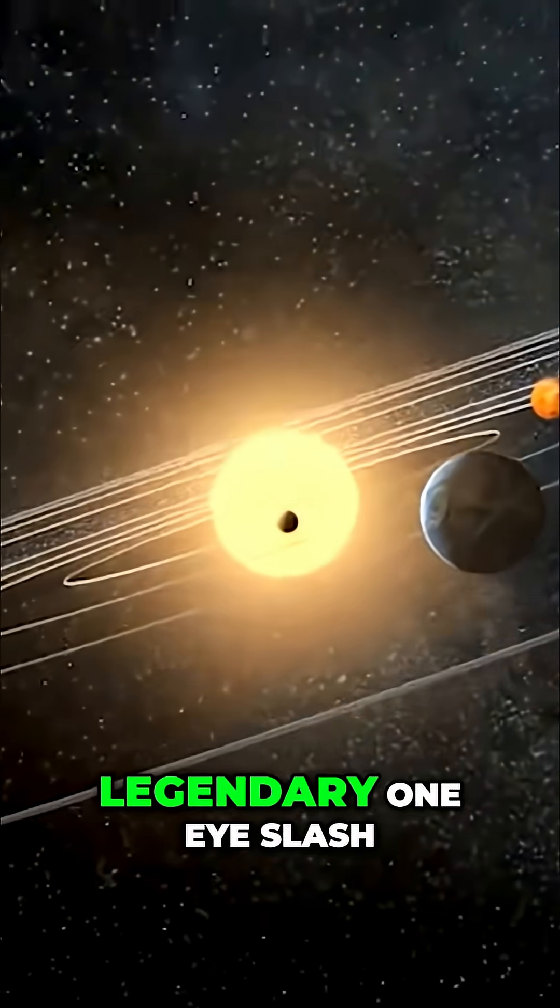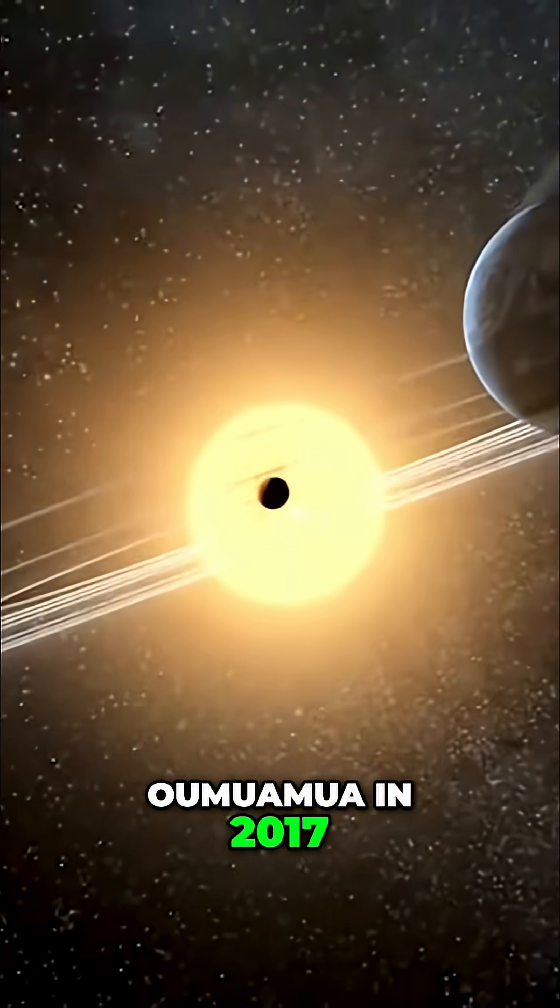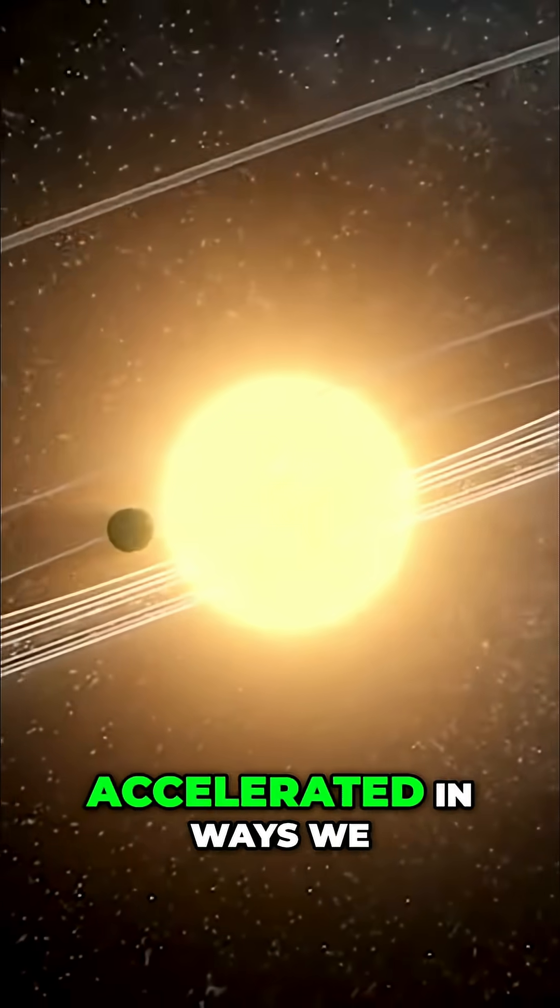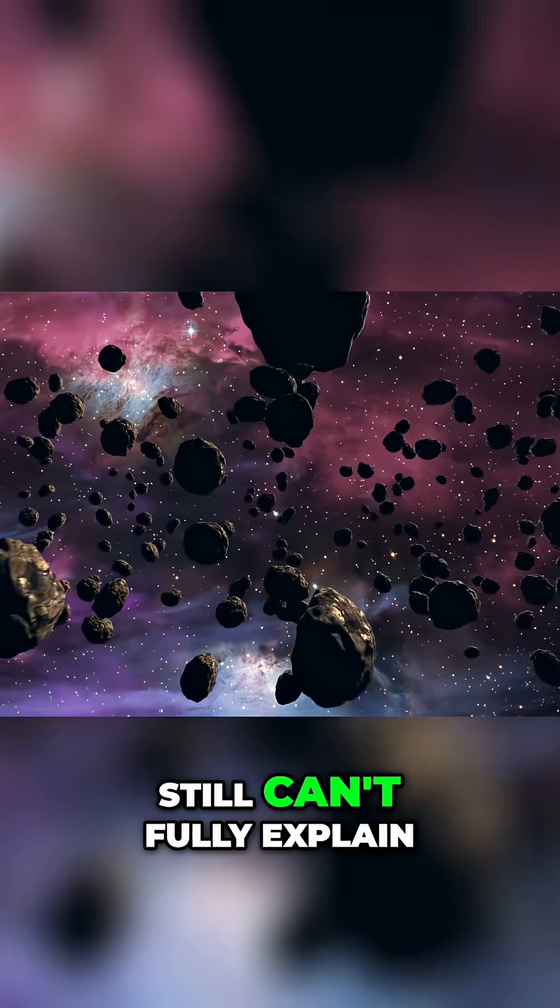The first was the legendary 1i slash Oumuamua in 2017, a bizarre cigar-shaped object that tumbled and accelerated in ways we still can't fully explain.